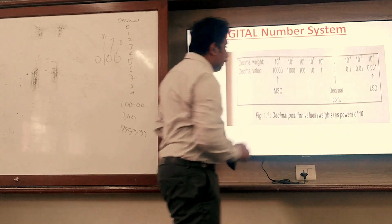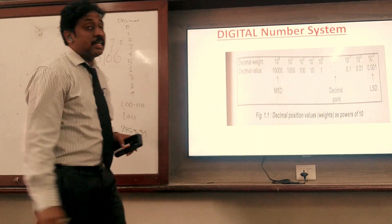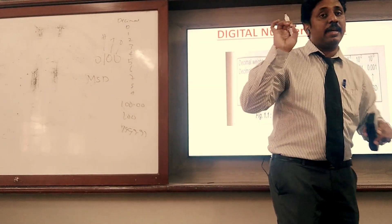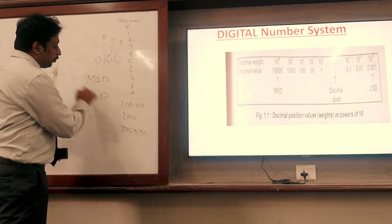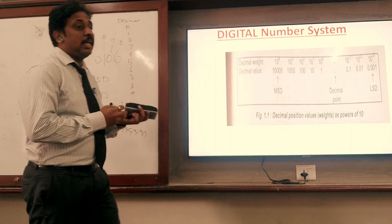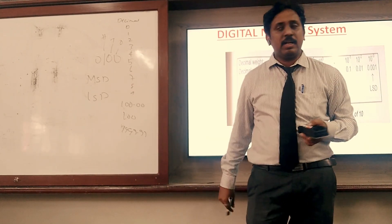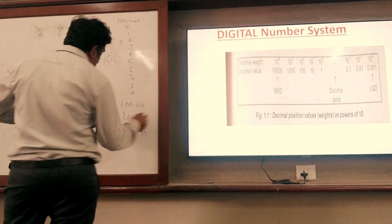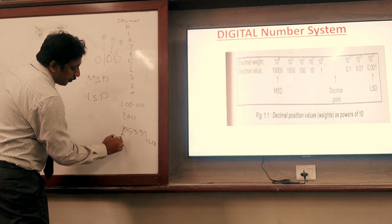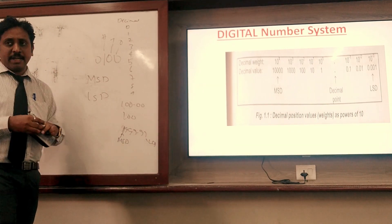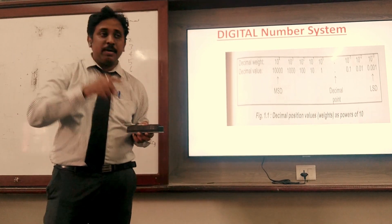If you look at a number, the leftmost digit is called MSD — Most Significant Digit. The rightmost digit is called LSD — Least Significant Digit. LSD is least significant digit and MSD is most significant digit. So the rightmost digit is LSD and the leftmost digit is MSD. That is the decimal number system.